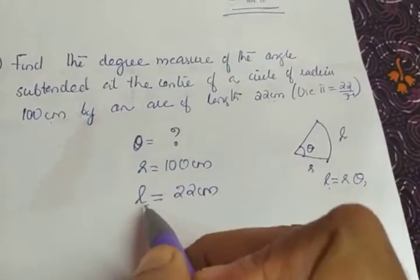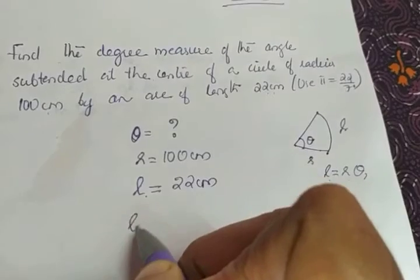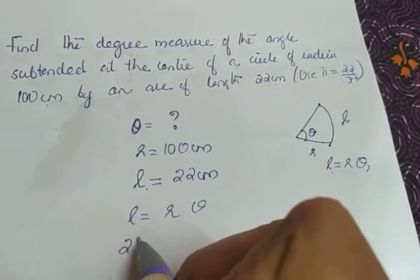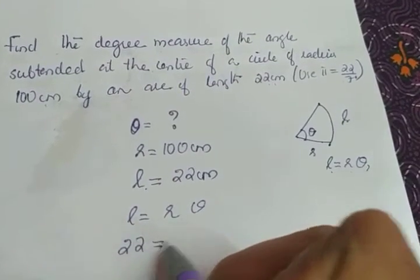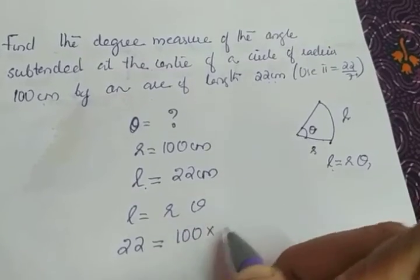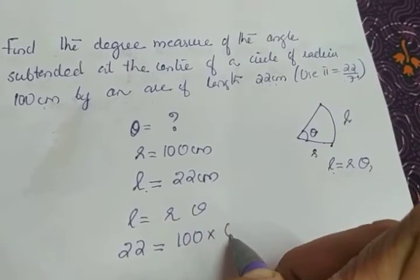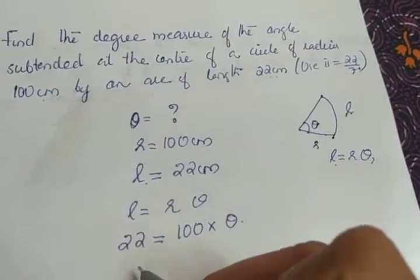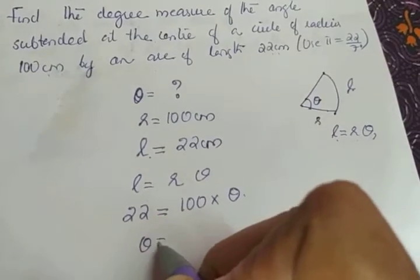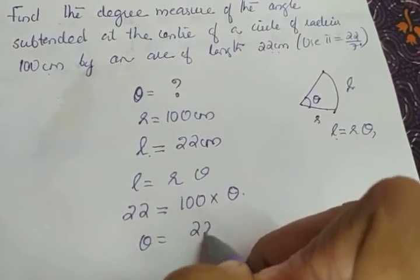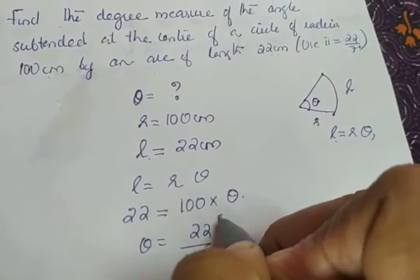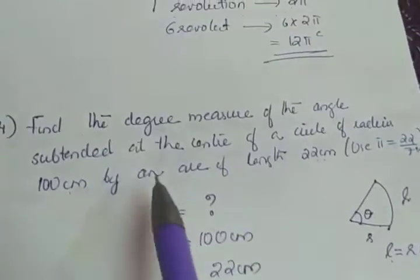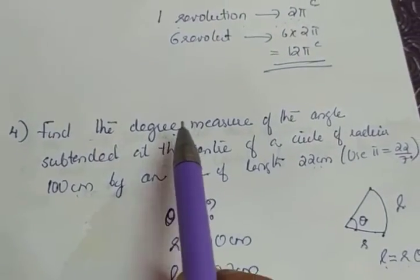Applying the formula l = r × θ: l is given as 22, r is given as 100, and we need theta. So theta equals 22 divided by 100 radians. Since the question asks for the degree measure, we need to convert this radian value to degrees.